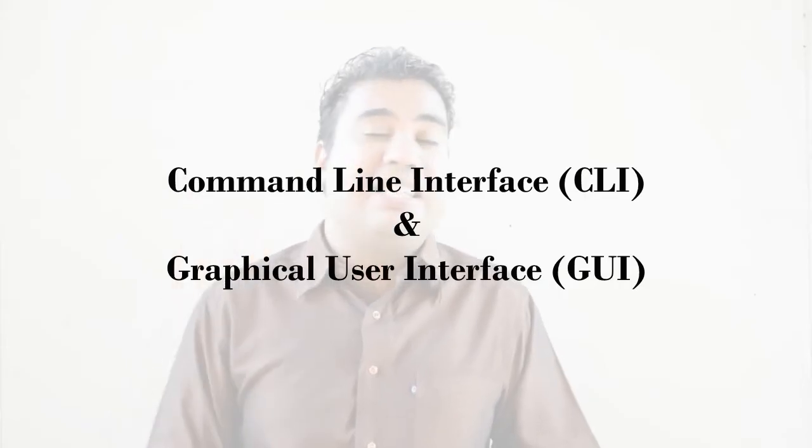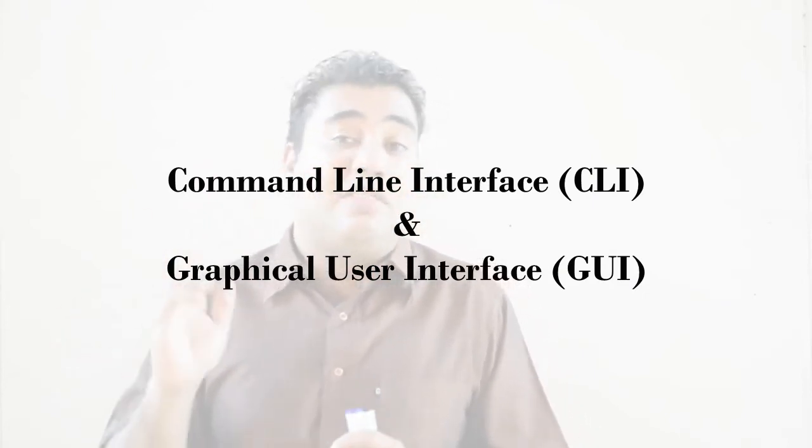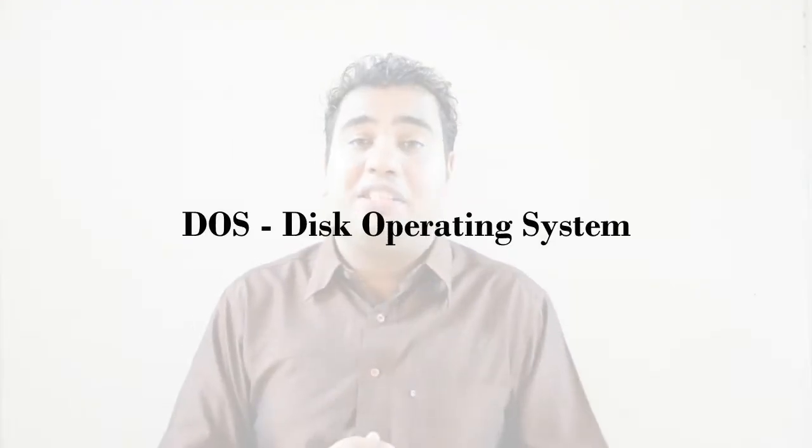Now let's move on to providing a user interface. There are two types of user interfaces: the Command Line Interface (CLI) and the Graphical User Interface (GUI). The most common in modern operating systems is the GUI. In the early ages we had command line interfaces — for example, the DOS operating system used a CLI, which is simply a black interface where you had to type written commands to do anything on the computer.